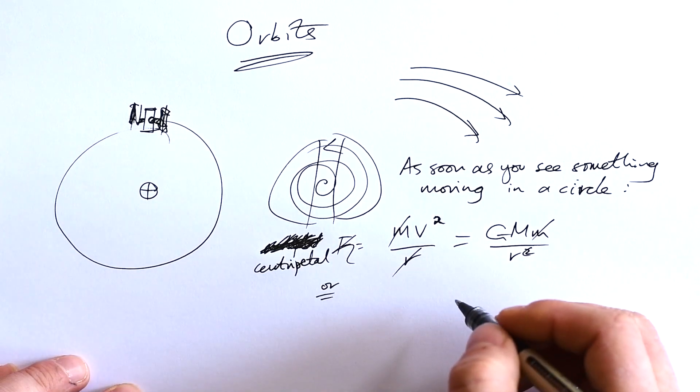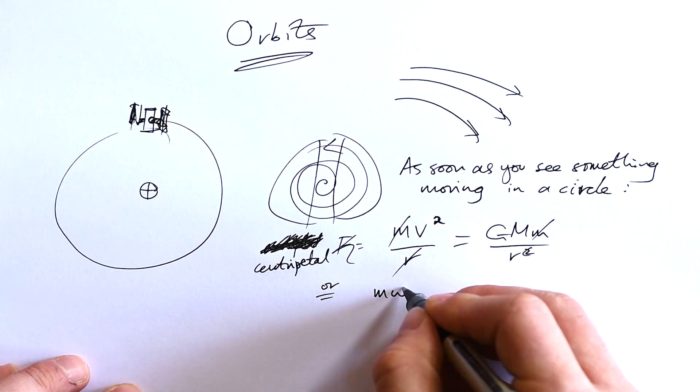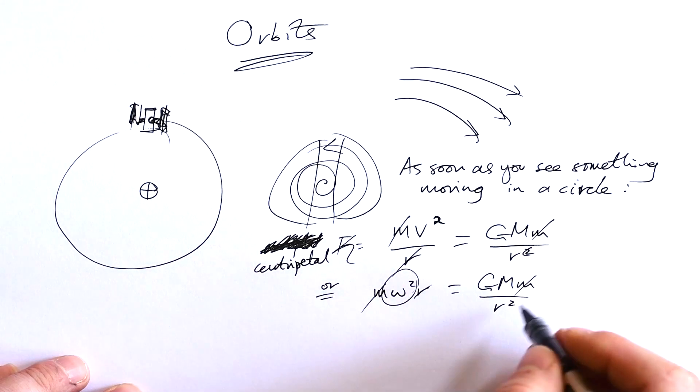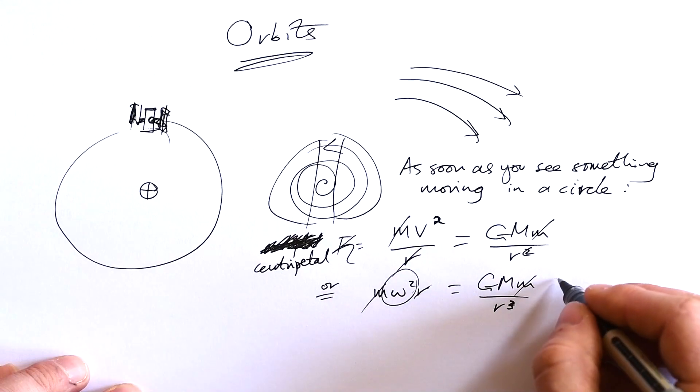Alternatively, if you're looking for frequency and that kind of thing, you could instead use m omega squared r. Again, one of the m's cancels, and then we can say that omega is 2 pi f. We also know that that is going to go over here. Incidentally, this is how we prove Kepler's law.